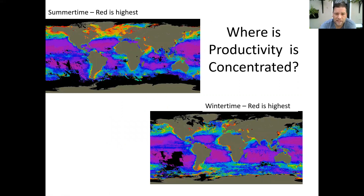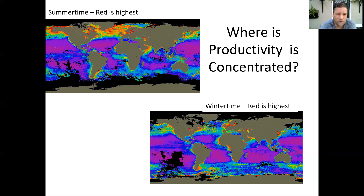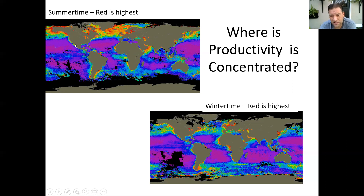Plankton and plants typically use chlorophyll, and you can have satellites that will detect that chlorophyll in the water. We've got two pictures that are snapshots of how much chlorophyll is in the water — chlorophyll equals productivity. The more chlorophyll in the water, the more plants are present and the more they are growing. The top picture is labeled summertime and the bottom is labeled winter. You can see a big transition from a lot of red in the northern hemisphere to a lot more red in the southern hemisphere. Productivity is concentrated in our polar regions, and if you look carefully, also along the coastlines — particularly the west coast.